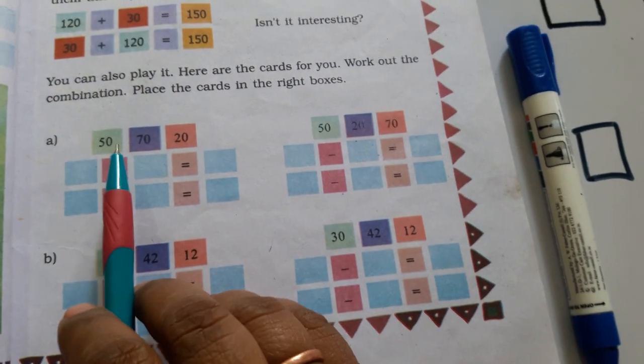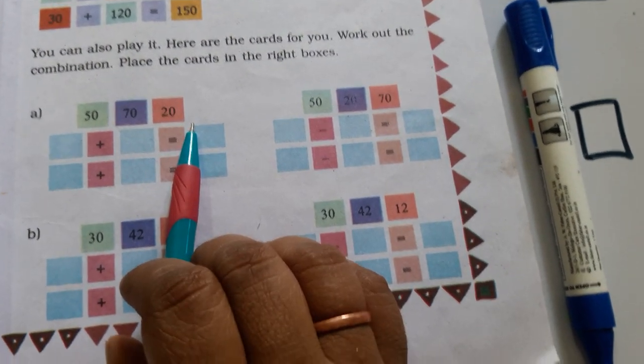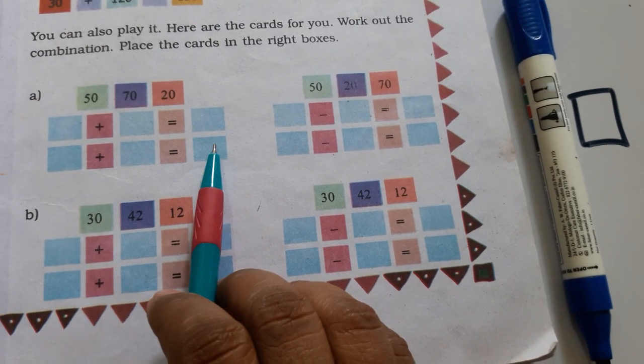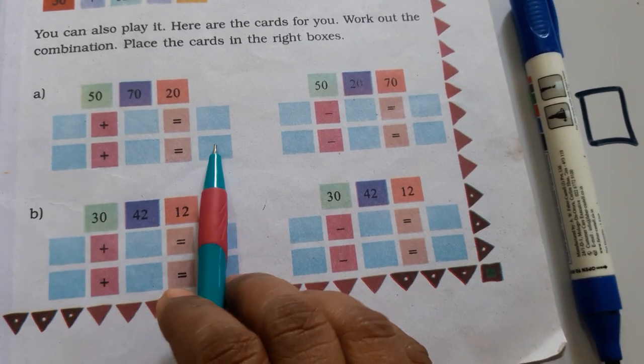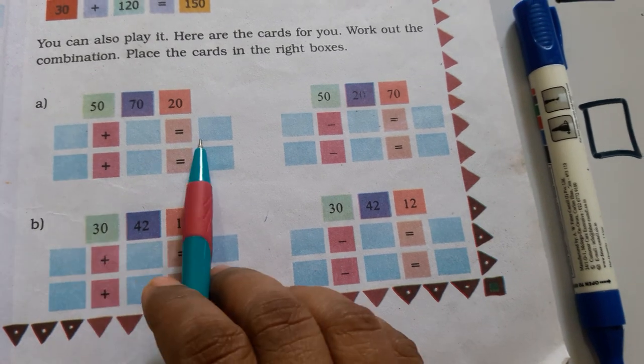The first part is 50, 70 and 20. We have to make combinations so that this becomes true or this becomes right. What will be the combination here?